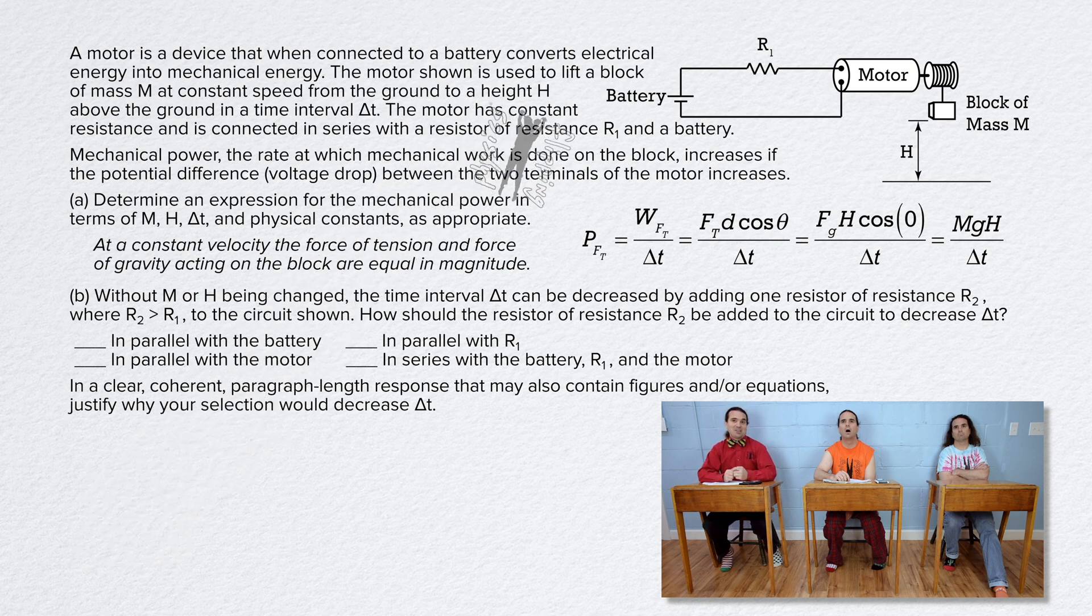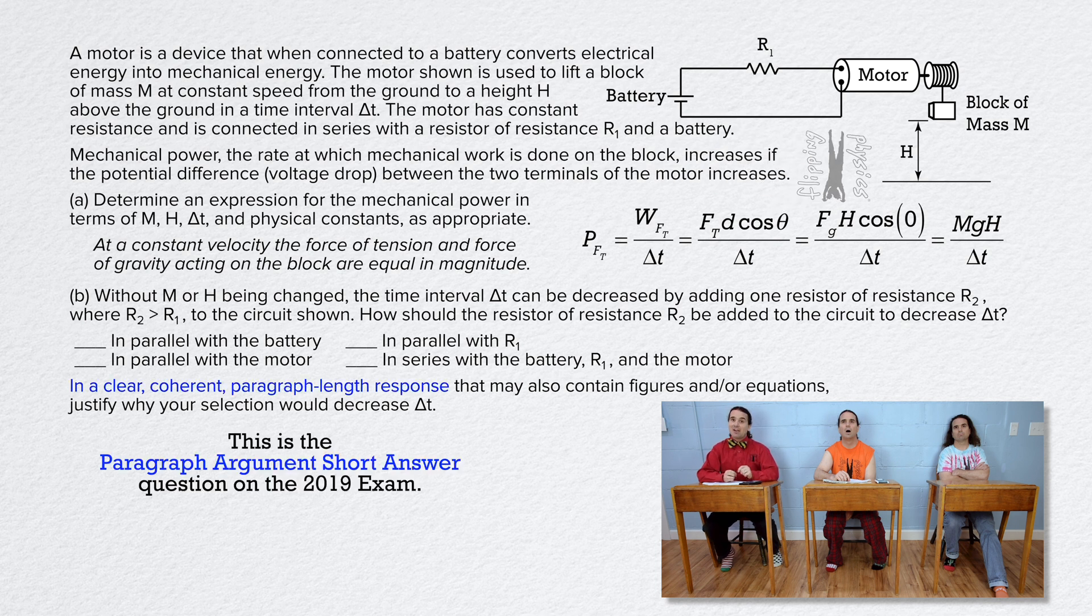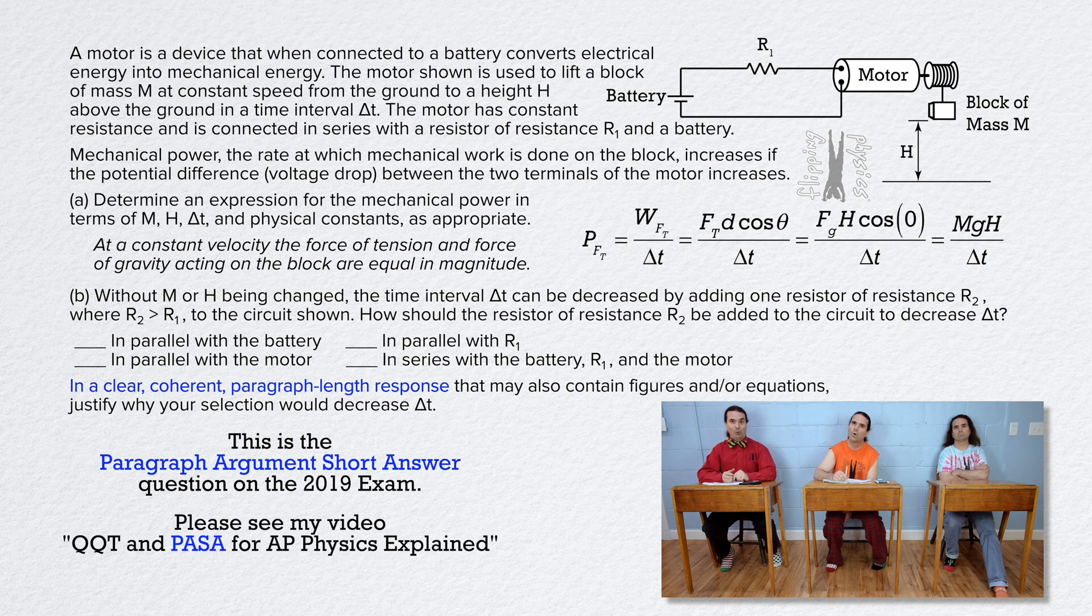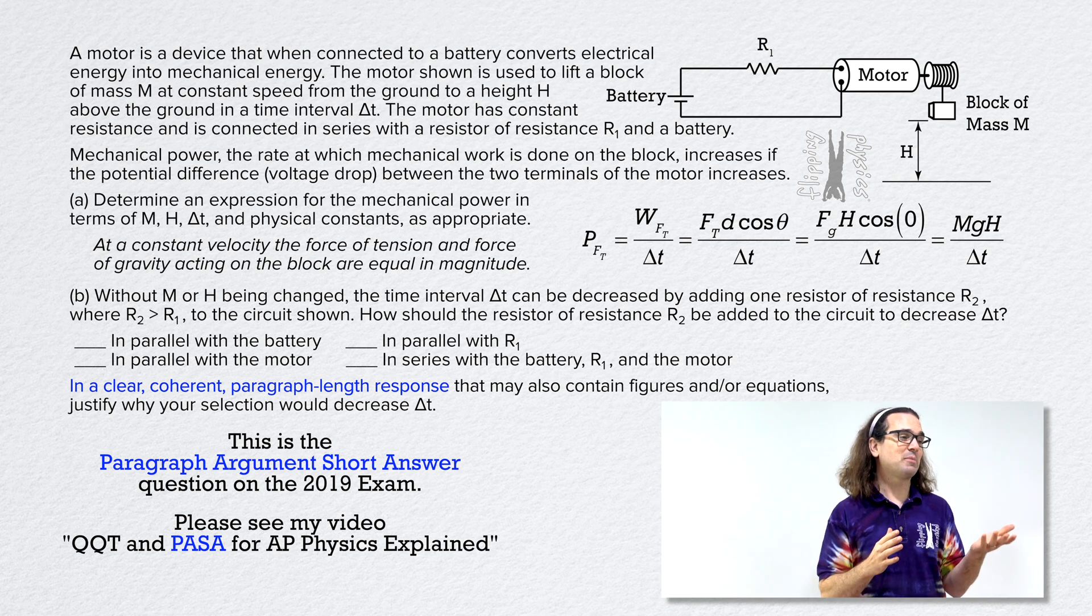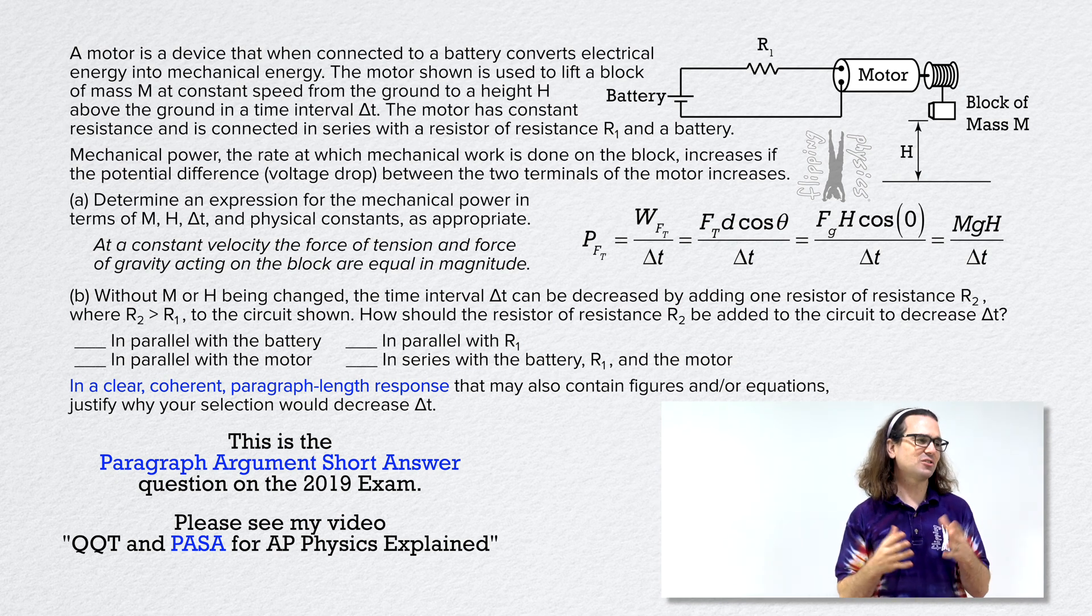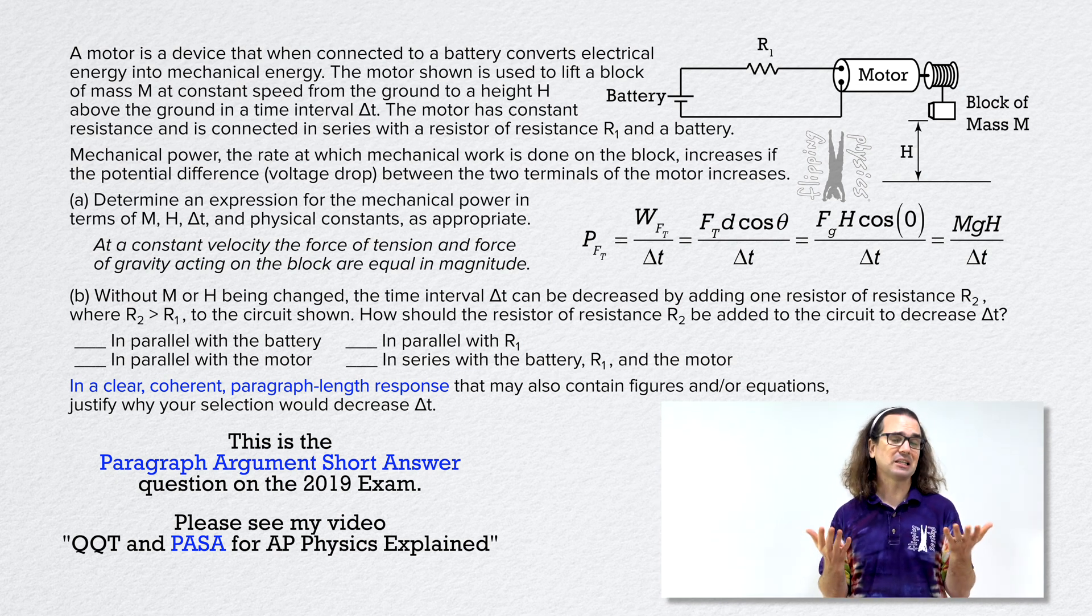So because it asks for a clear coherent paragraph length response, this must be the paragraph argument short answer question on the 2019 AP Physics 1 exam, and you are going to suggest that we make sure you employ what I describe in my video, qualitative quantitative translation as paragraph argument short answer for AP Physics Explained. Right, Mr. P? That is correct, Billy, only I think you just suggested it so I'm not going to be redundantly redundant. You are welcome, Mr. P.